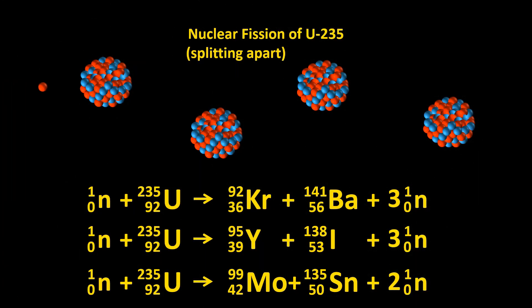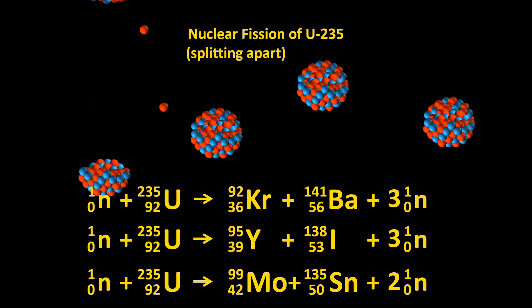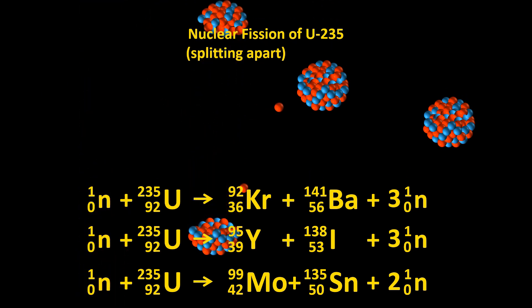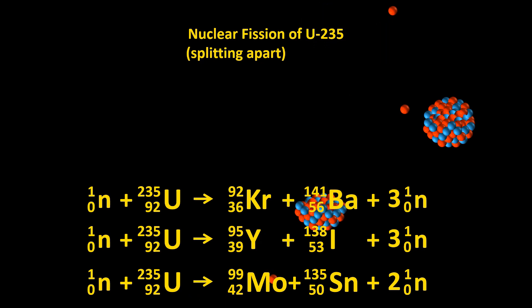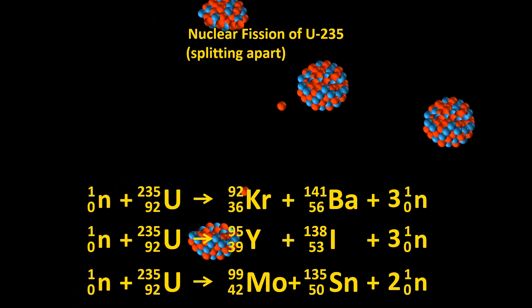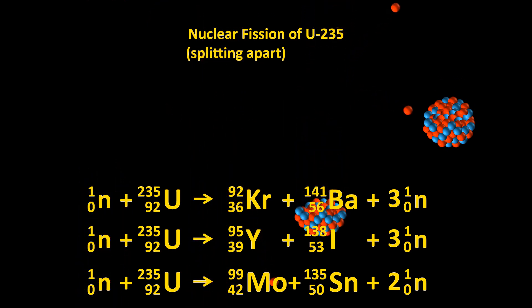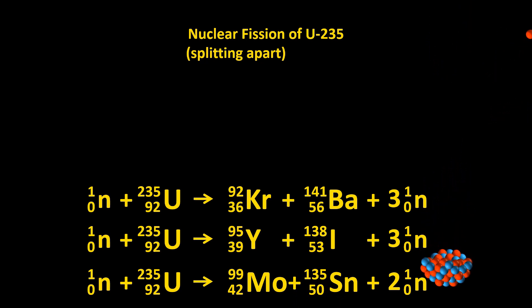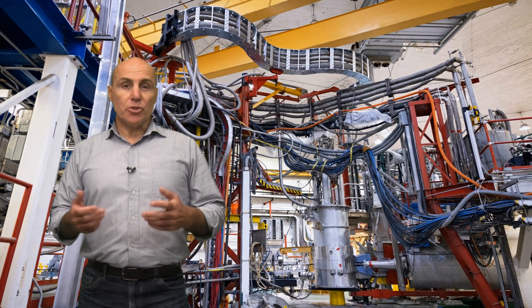Very importantly, the fission process typically releases two or three neutrons. These neutrons can crash into other U-235 atoms and cause them to fission as well. A self-sustaining chain reaction can occur if the reactor has the right configuration and concentration of U-235 atoms.